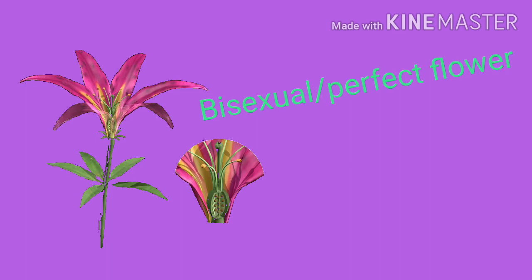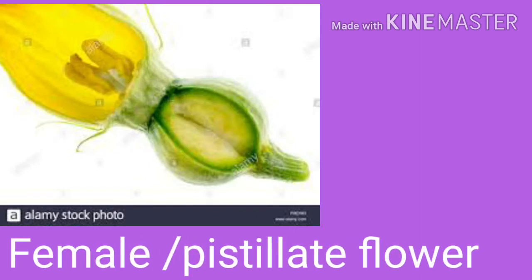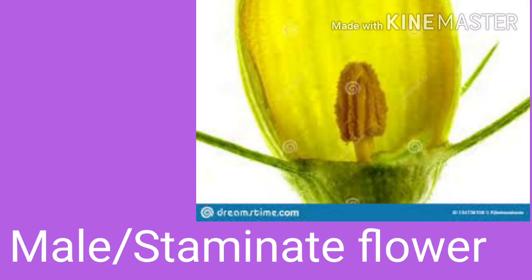A flower which contains both stamens and carpels is said to be a bisexual or perfect flower. A flower having either stamens or carpels is called unisexual or imperfect flower. A unisexual flower containing only the carpels is called a female or pistillate flower. A unisexual flower containing only the stamens is called the male or staminate flower.